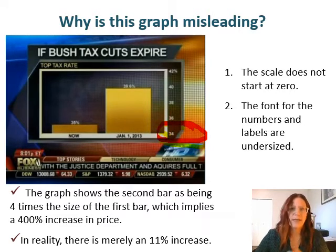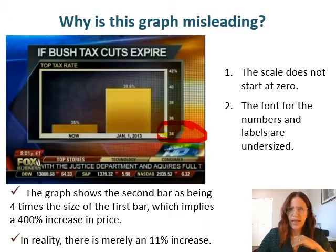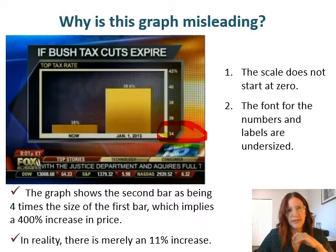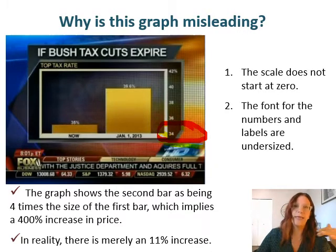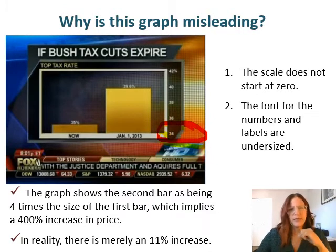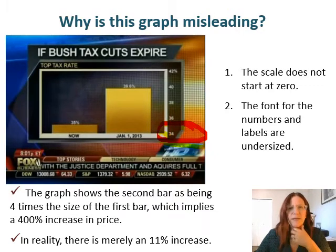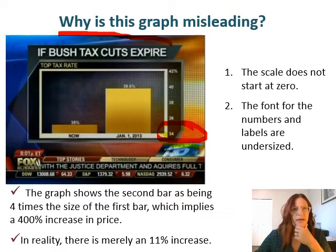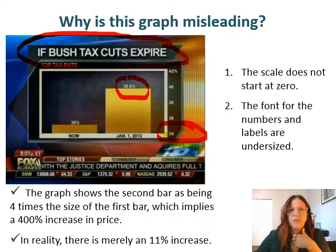It's starting at 34, so it should be starting at zero. Each of the increments above it should be equal — if it started at zero, then it would maybe be 10, then 20, then 30, then 40. It needs to be equal increments. Another thing that I feel is misleading is the font and the numbers. We have this huge font for the title, but then we have tiny font for these percentages because they kind of don't want you to really look at the percentages.